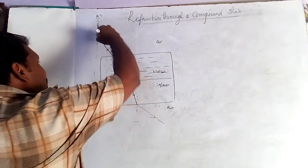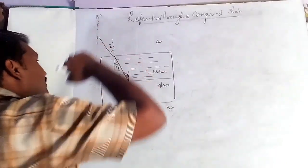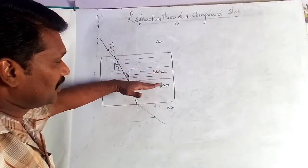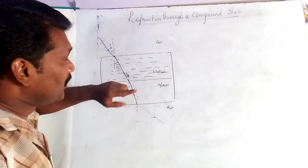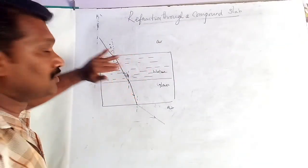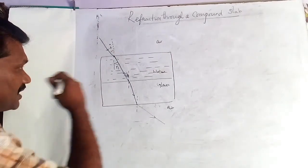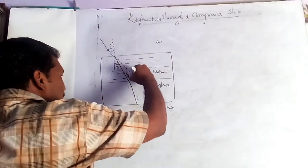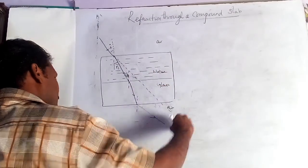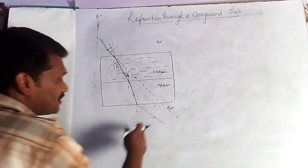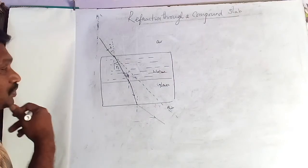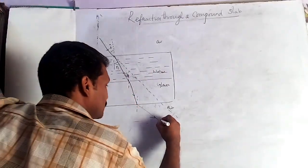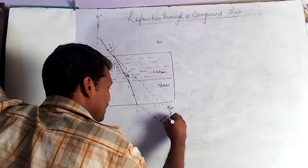Now consider this ray. If there were no water-glass medium — only air medium — the ray would travel straight. This much amount of bending takes place due to the presence of the different mediums. This bending is the lateral displacement.